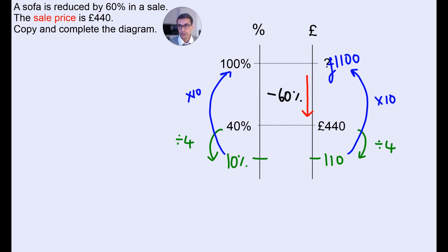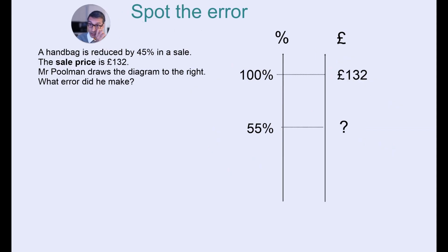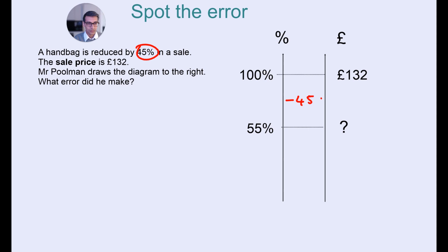£1,100 for a sofa. Okay, spot the mistake with this. Here's a diagram that's been filled out — do you spot what's happened? Pause the video if you need more time. So a 45% decrease means that we are left with 55%, so that's correct. The sale price is £132, so actually this value should be £132, not where it currently is. So we need to move that down there.